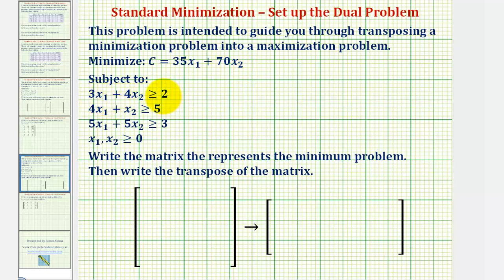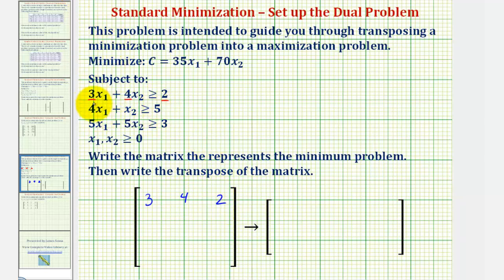So the first inequality will give us the elements or entries of the first row, which again will be the coefficients. So the first row is going to be three, four, two. The second row will come from the coefficients of the second inequality, which would be four, one, and five. The third inequality gives us the entries for the third row, which would be five, five, and three.